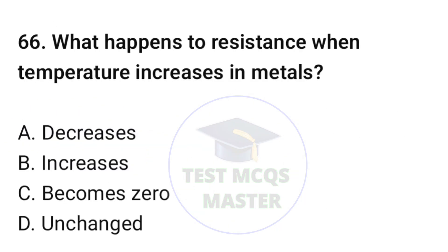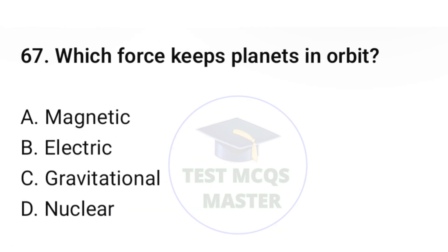Question number sixty-six: what happens to resistance when temperature increases in metals? The correct option is B, increases. Question number sixty-seven: which force keeps planets in orbit? The correct option is C, gravitational force.